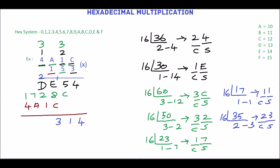Next add 2 plus D. D is 13, so 15. Then 15 plus 2 is 17. Plus 1 is 18. 18 is not a hex number. We will convert this — the quotient is 1 and the remainder is 2. The equivalent hex number is 12. In this, 2 is the sum and 1 is the carry. Write sum here.